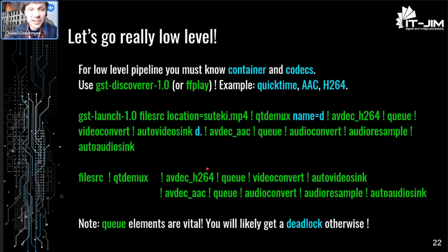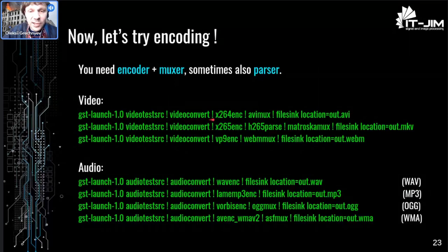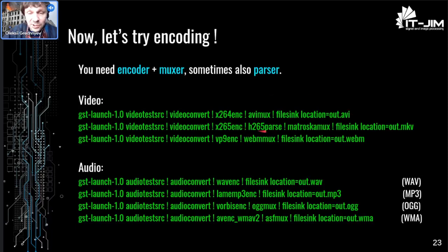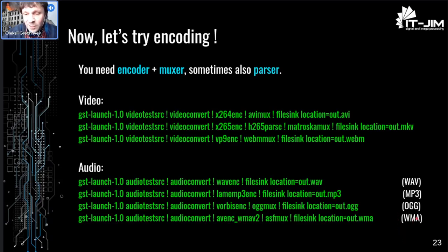Now let's try encoding — it's not much harder. You take a test video source, encode it with x264enc, mux it into an AVI file, and write it to an AVI file. For H.265 you also need a parser for some reason. Here we use the Matroska muxer to create an MKV. Another option uses VP9 codec and muxes into WebM, a version of Matroska. For WAV you don't need a muxer, only an encoder. Same for MP3. For OGG you need a Vorbis encoder and OGG muxer. The last example is for WMA. They all work — checked.